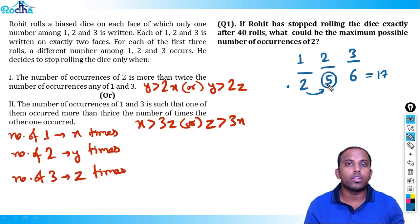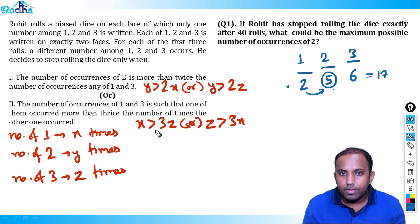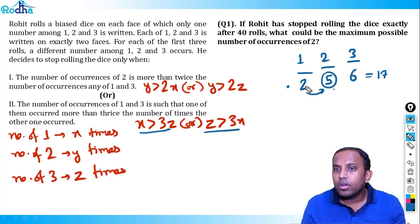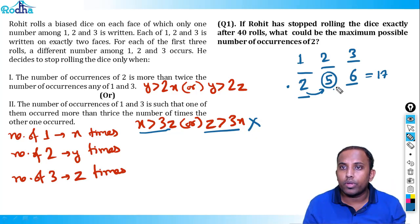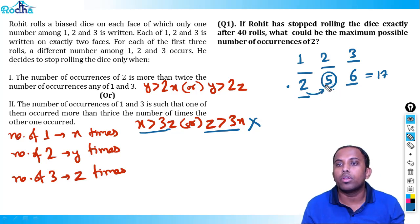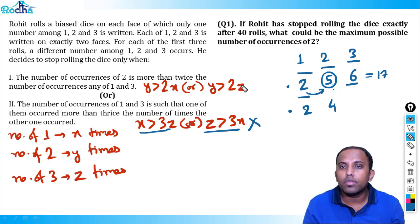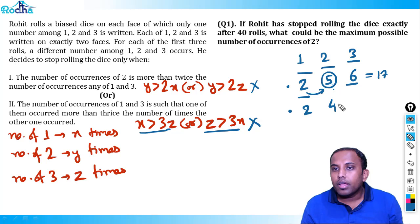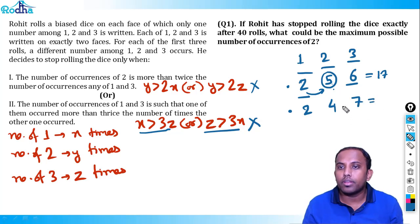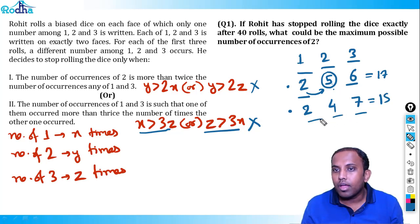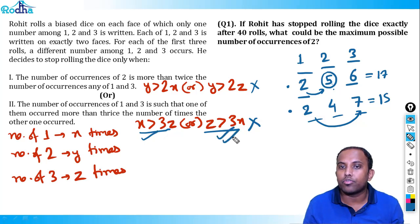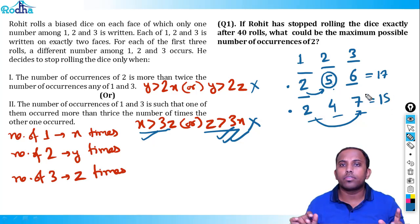Another example: number of 1 = 2, number of 2 = 4, number of 3 = 9. Here y is not greater than 2x (4 is not more than double of 2), so the first condition fails. But z = 9 and x = 2; 9 is more than 3 times 2, so z > 3x — the second condition is satisfied, dice stops after 15 rolls. This illustrates how either condition can trigger a stop.